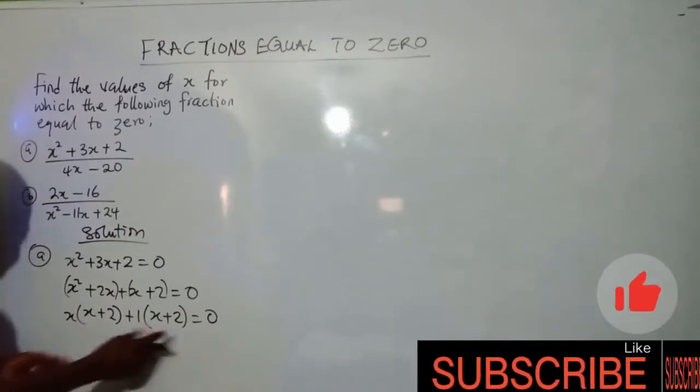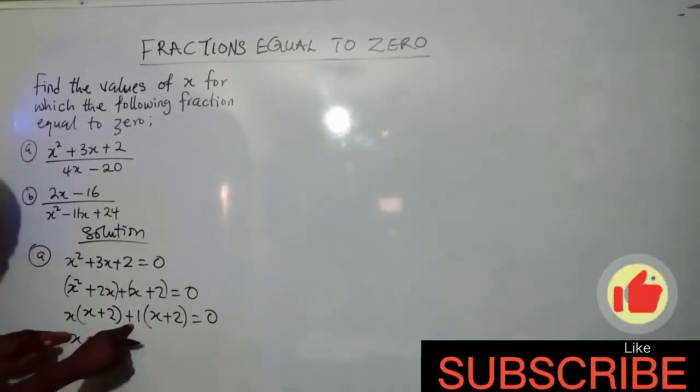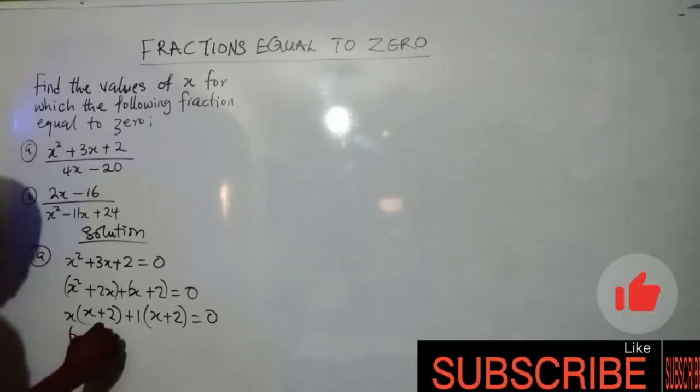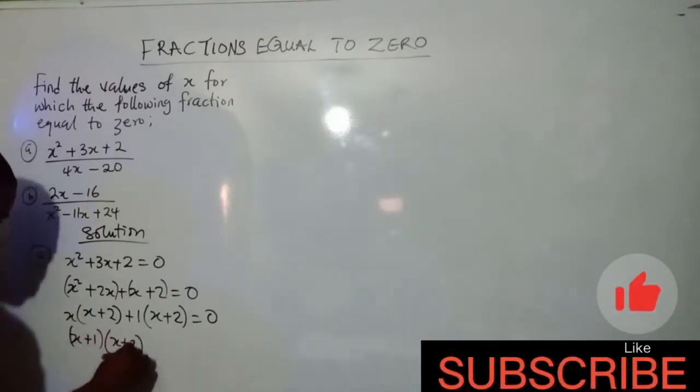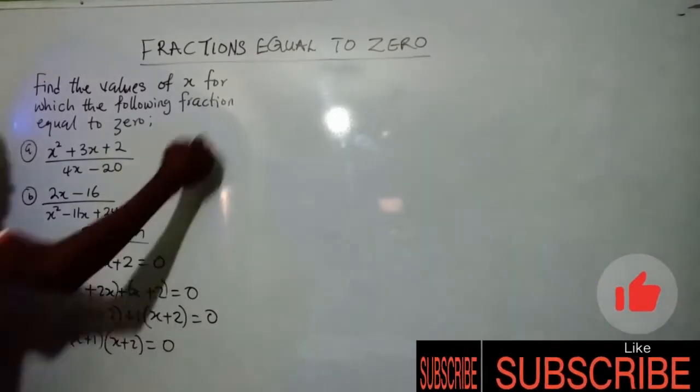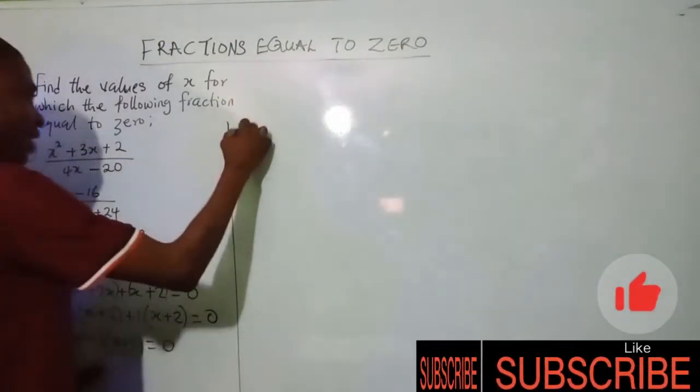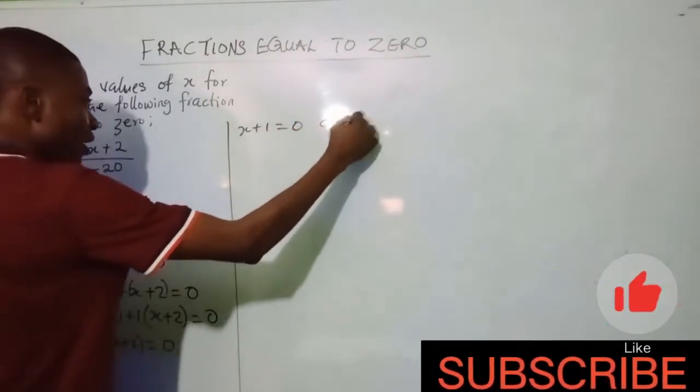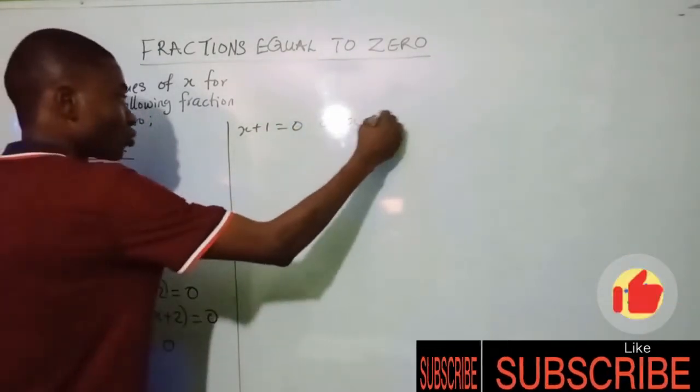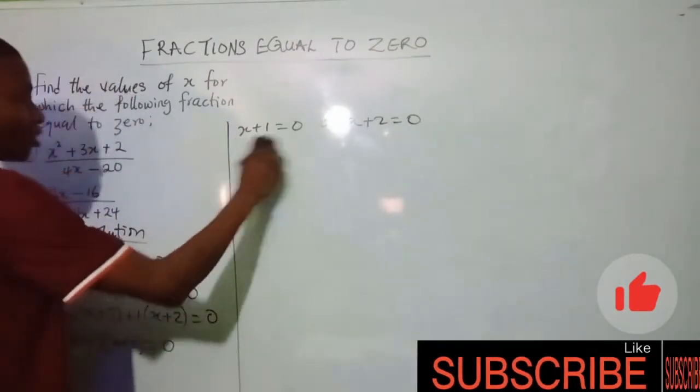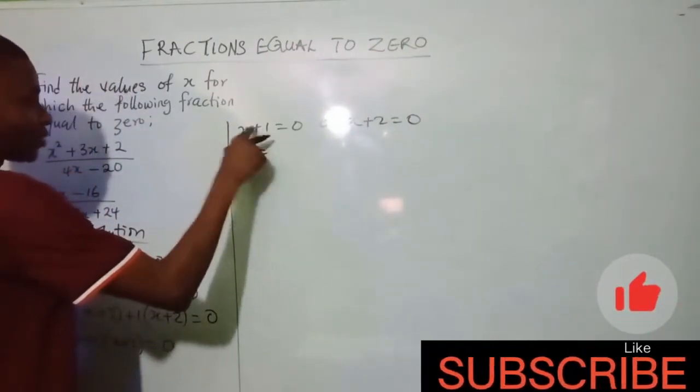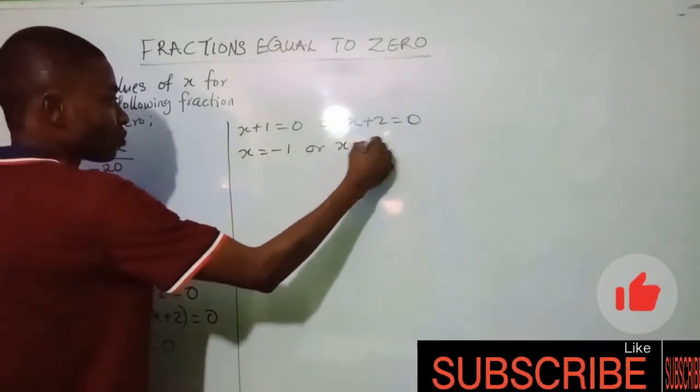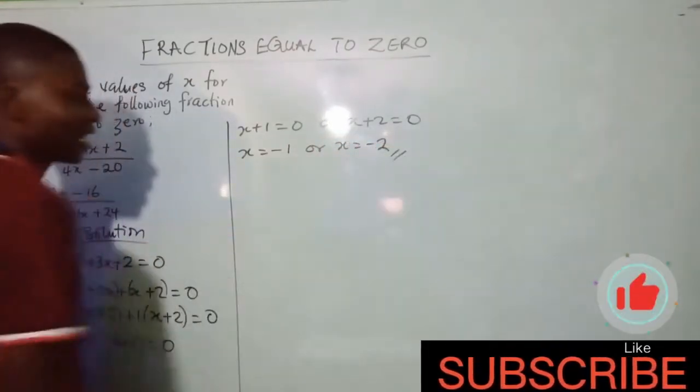If you look at what's in the brackets, they are the same. So this would be (x+1)(x+2)=0. This is the same as saying x+1=0 or x+2=0. Collecting like terms, x=-1 or x=-2. And that is the answer.